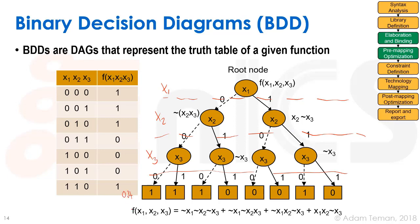This is the layer of the outputs, which is f. The ordering here is very important — if we wrote the variables as x2, x3, x1 or some other arrangement, we would get a different BDD. So here we have x1, x2, x3. We look at the root node x1: if x1 is 0, we go on the dotted line; if x1 is 1, we go on the solid line to two nodes of x2, and we keep traversing down until we reach the output level.